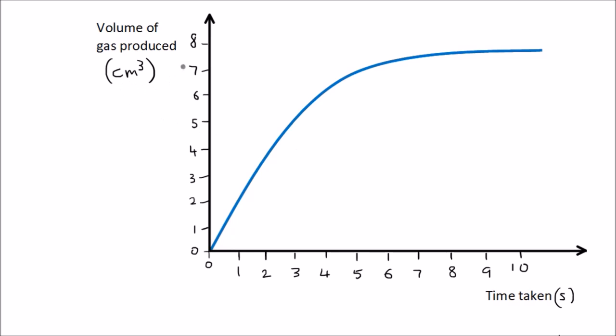So this graph shows the volume of gas produced over time, and the volume of gas produced is measured in centimeters cubed and the time taken is measured in seconds. And there are two ways we can calculate the rate of reaction.